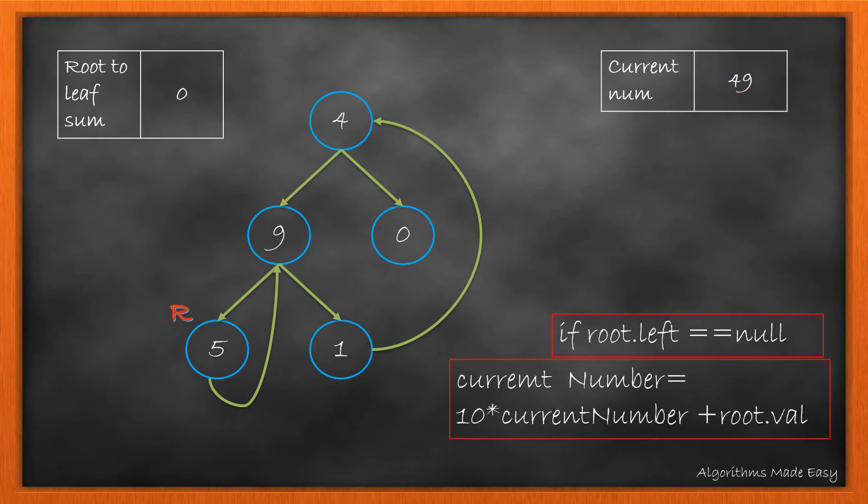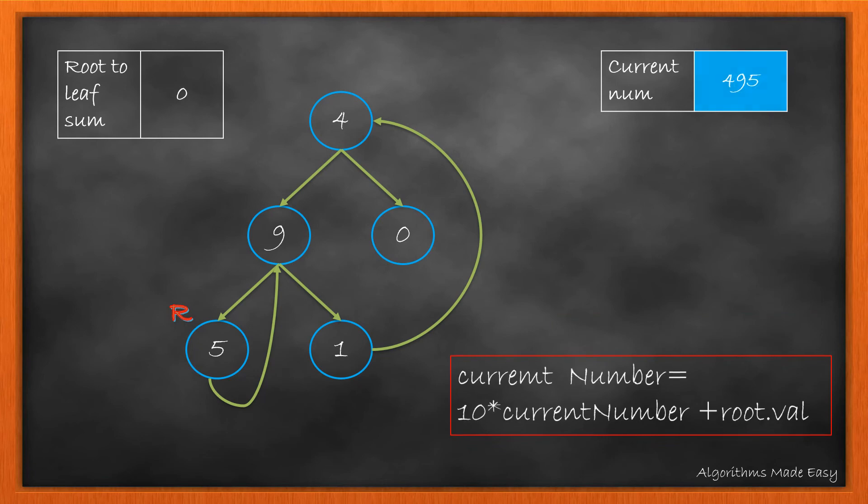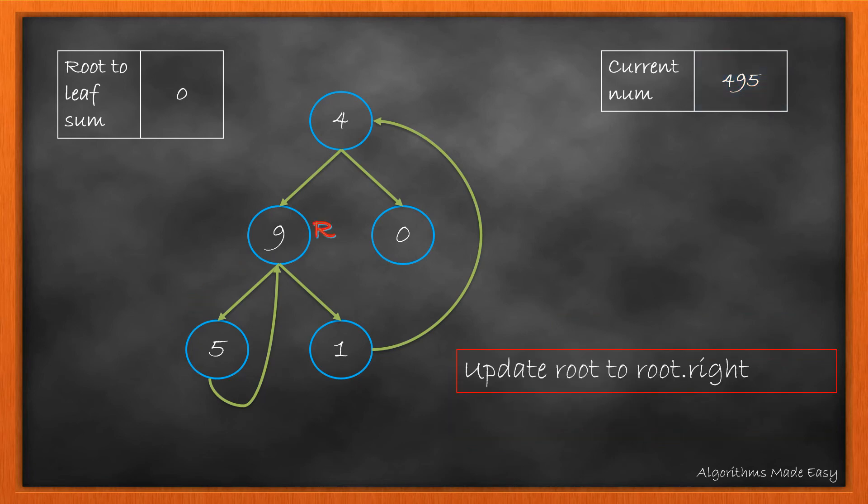We again check if root.left is null. We update current number. As left is null, we move root to right.